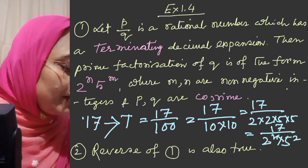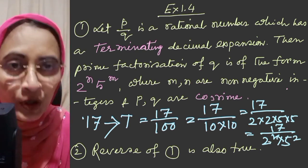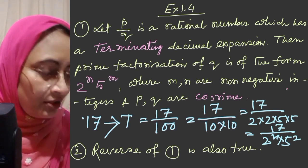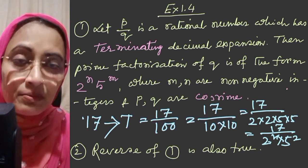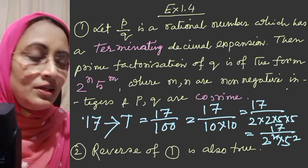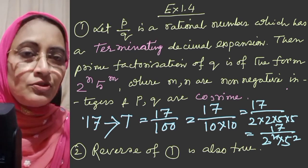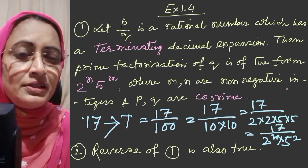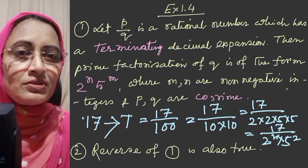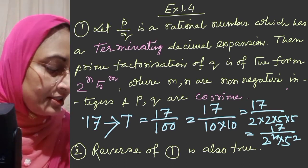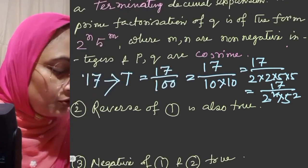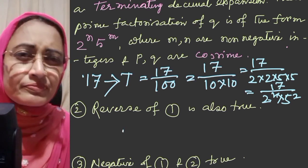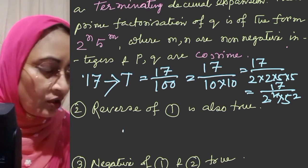Any number we can call terminating if we can write it and terminate it — this is our basic thing, basic knowledge. You can see the logic: how many numbers have this property which you can use.